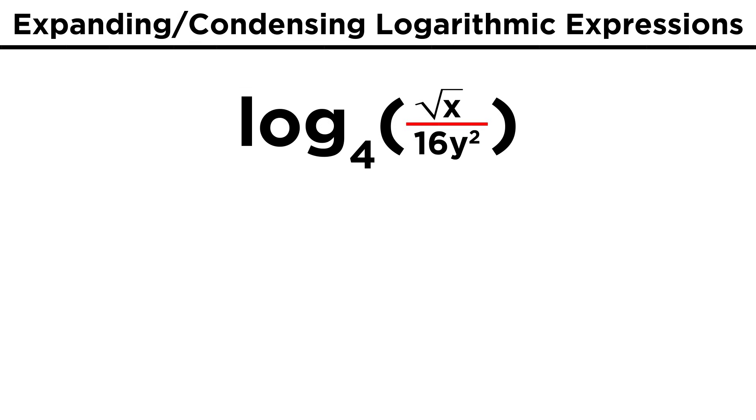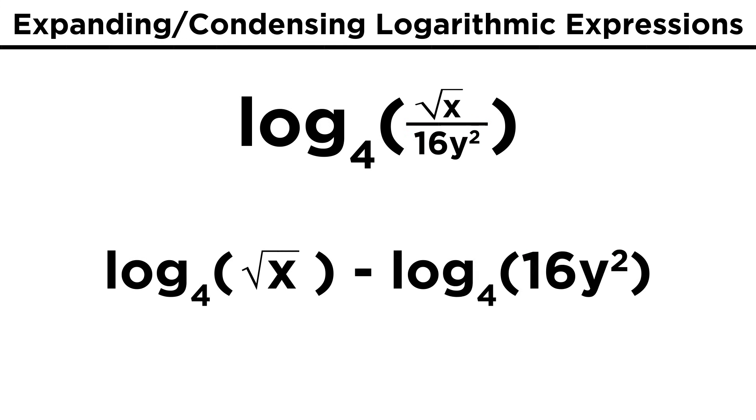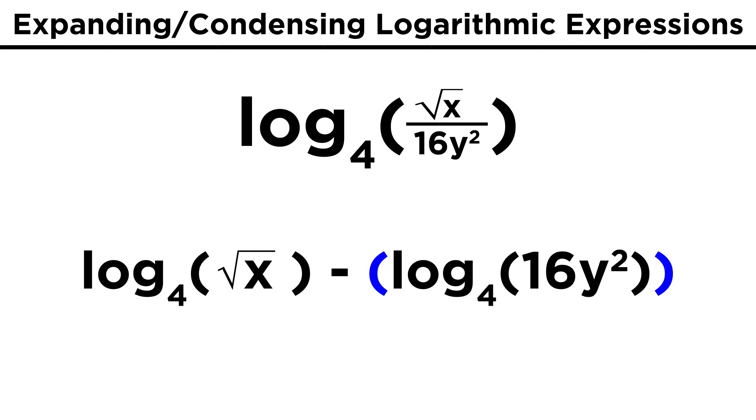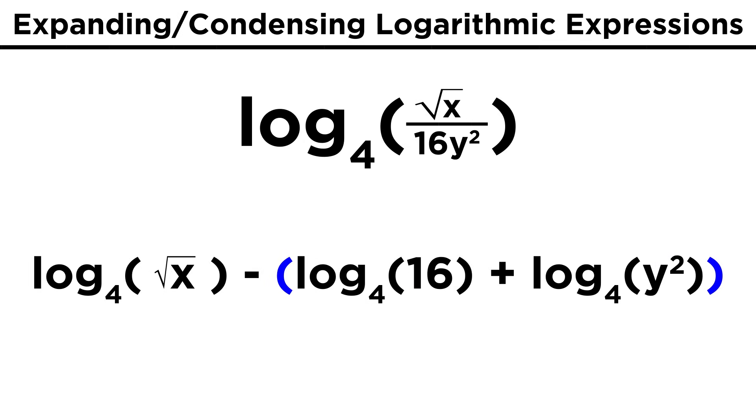The first thing we notice is that we have a quotient, so let's break this into log of root X minus log of sixteen Y squared. This second term has a product, so we can expand again, but we have to be careful about our signs. To be safe, let's put this term in parentheses first. After expanding, we get log sixteen and log Y squared.